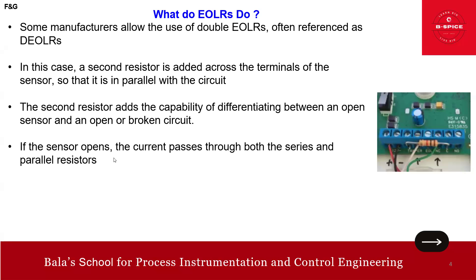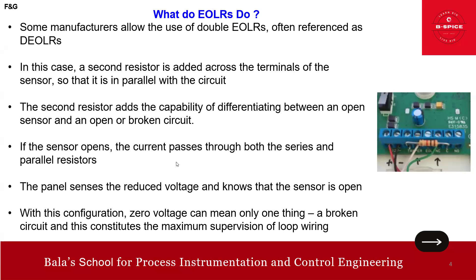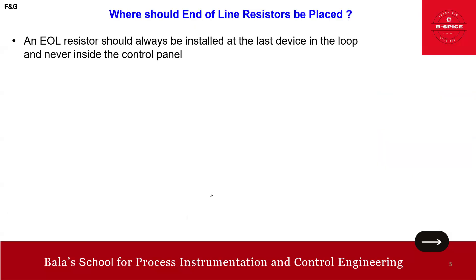The second resistor adds the capability to differentiate between an open sensor and an open or broken circuit. If the sensor opens, current passes through both the series and the parallel resistor, so the panel detects a reduced voltage and knows the sensor is open. With this configuration, zero voltage can mean only one thing — a broken circuit — giving maximum supervision of loop wiring.